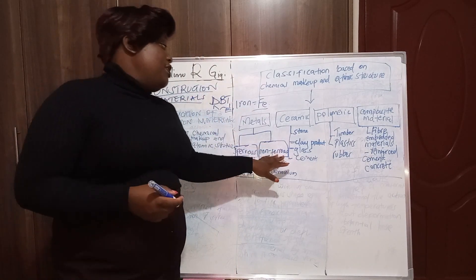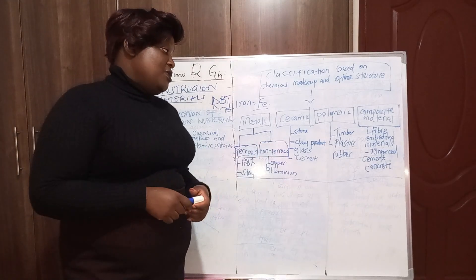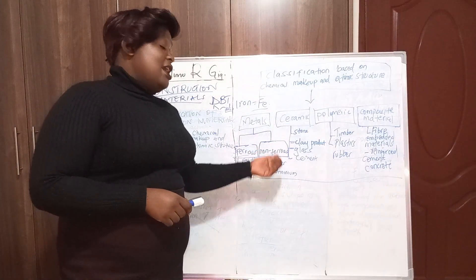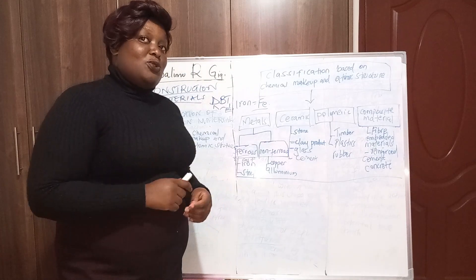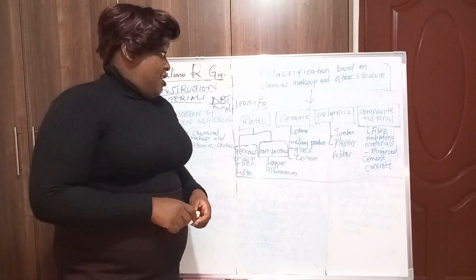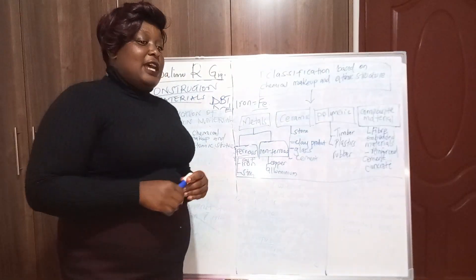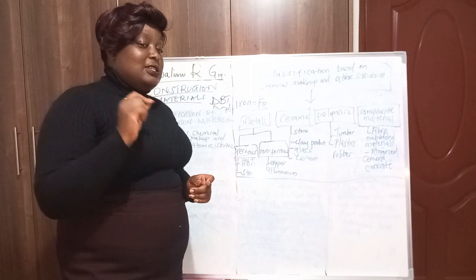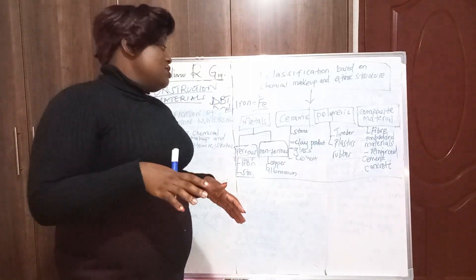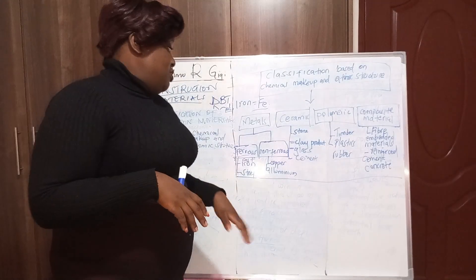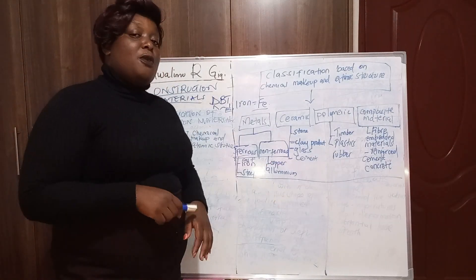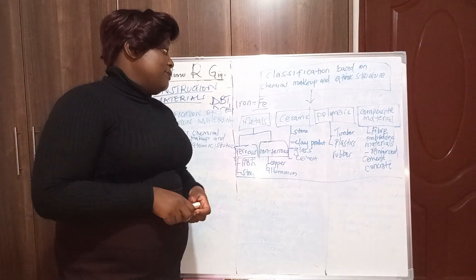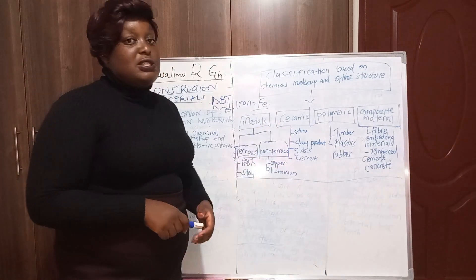For non-ferrous metals, these are metals that do not contain iron, or contain very little that is not recognized as iron. Examples include copper and aluminium.